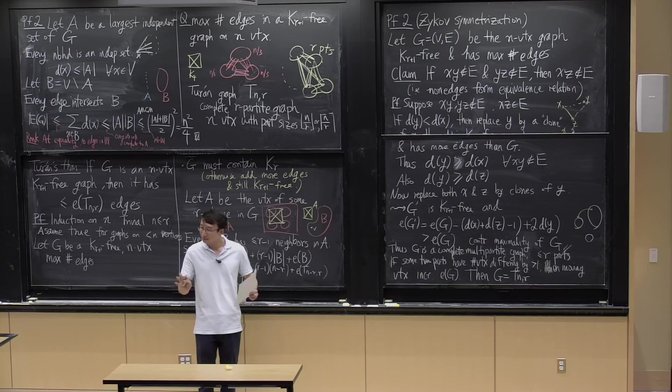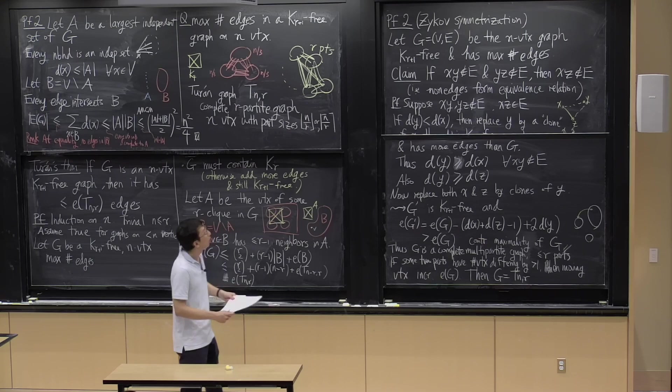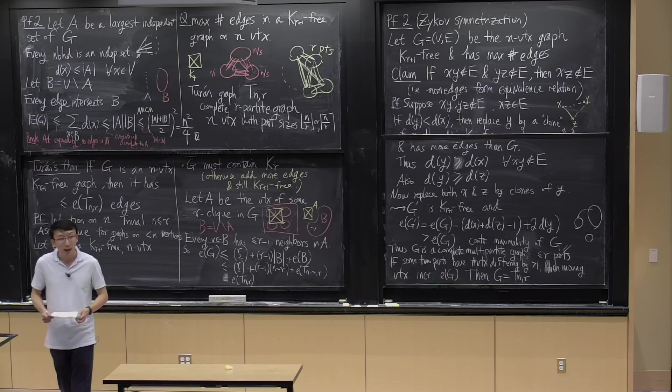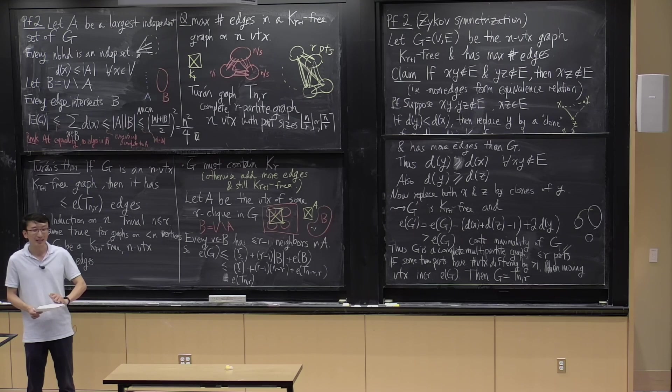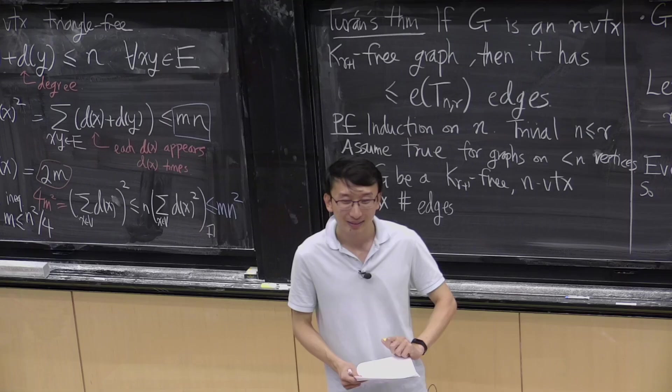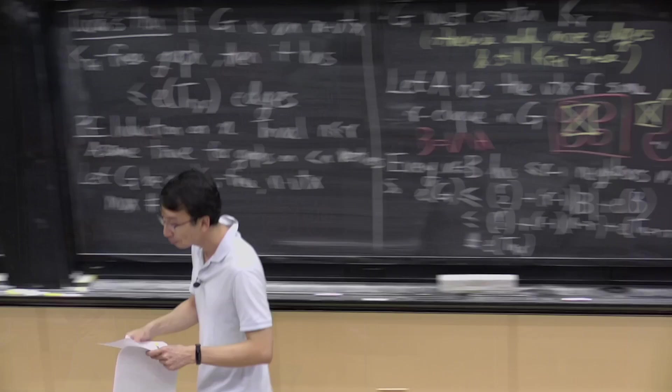The question is: can the Zykov symmetrization technique be used for other types of problems? I do have something else in mind, but I don't want to discuss it now. In both proofs you can see that the Turán graph is the unique extremizer.